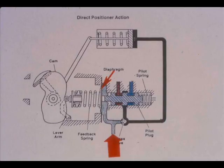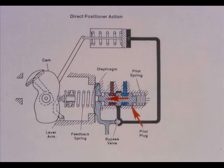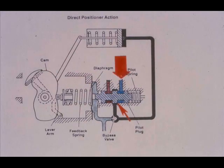For the direct acting positioner, as the input pressure increases, the diaphragm assembly moves to the left. The pilot plug follows the diaphragm assembly movement because the pilot plug is pushed by the pilot spring. As the pilot plug moves to the left, it connects the output circuit to the supply circuit, thus increasing the pressure on the actuator.